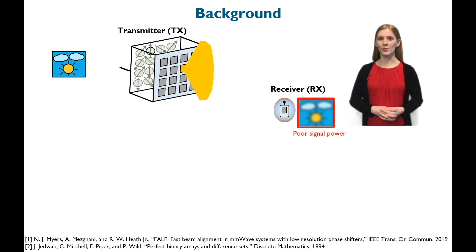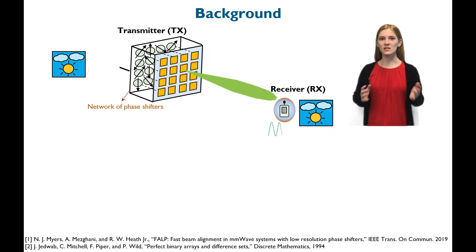Millimeter wave systems use beamforming where a signal is phase shifted and sent over multiple antennas to maximize the received power.